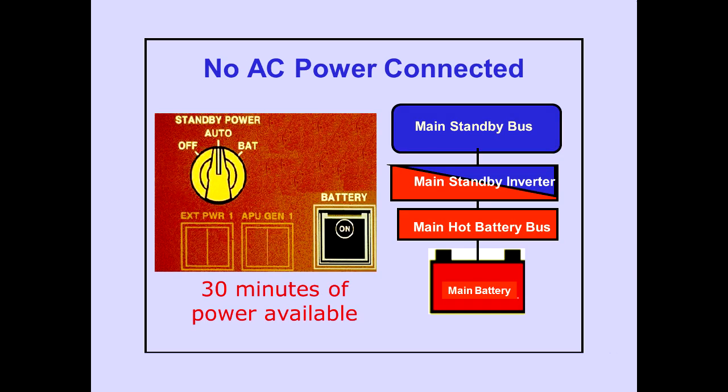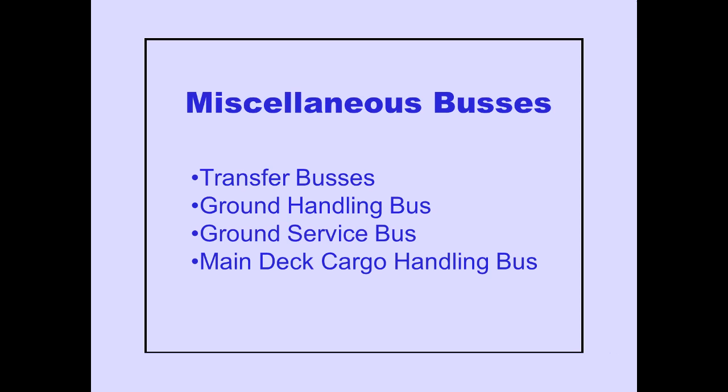With no AC power sources connected and the standby power selector in auto and battery switch on, standby power is provided from the main battery. Now we'll discuss the miscellaneous buses, which include the captain's and first officer's transfer buses, ground handling bus, ground service bus, and the main deck cargo handling bus.